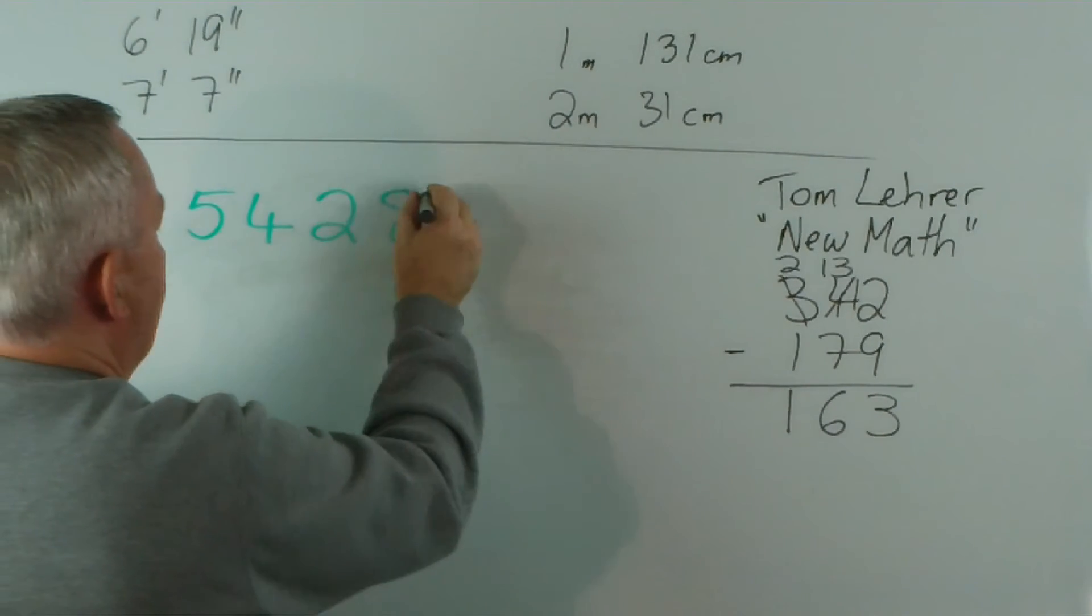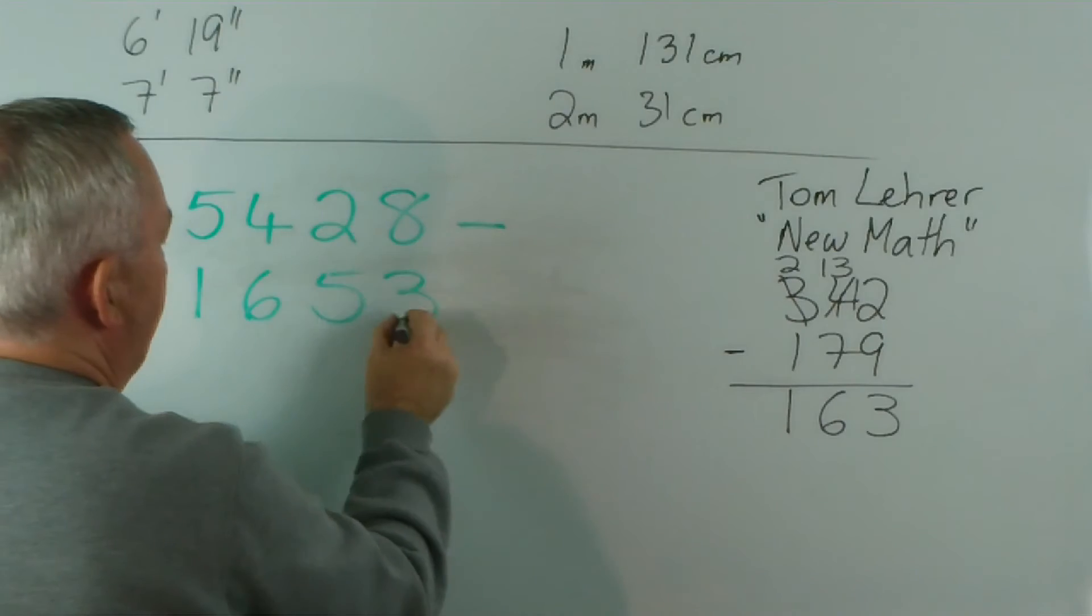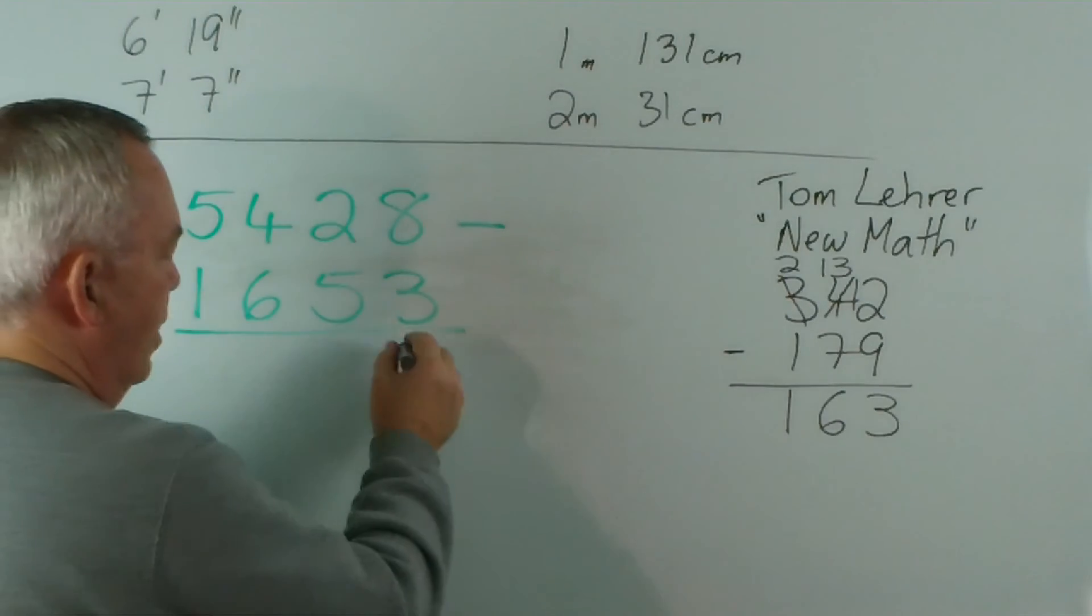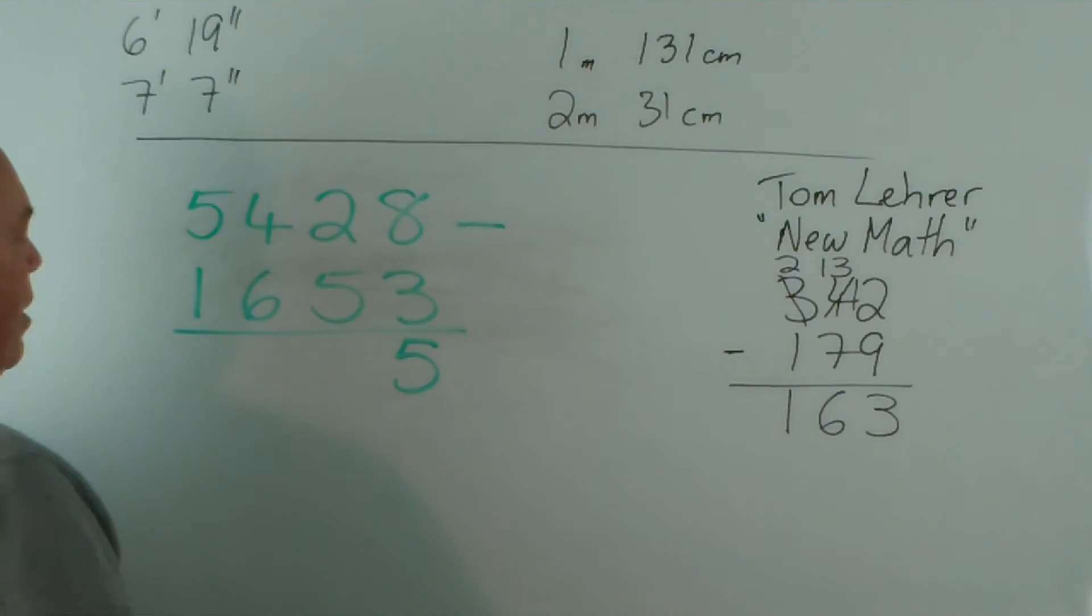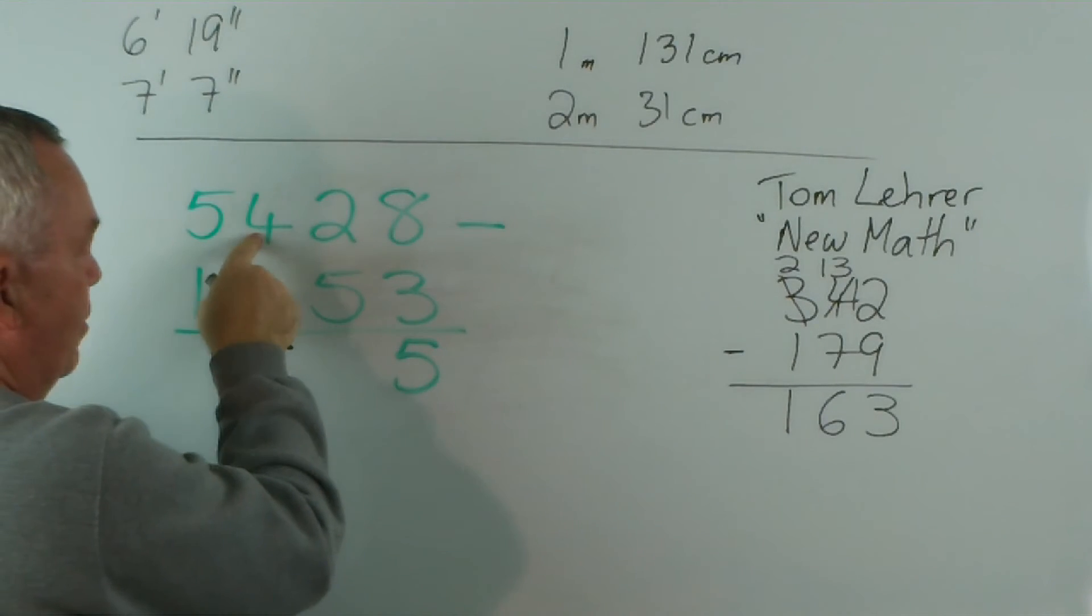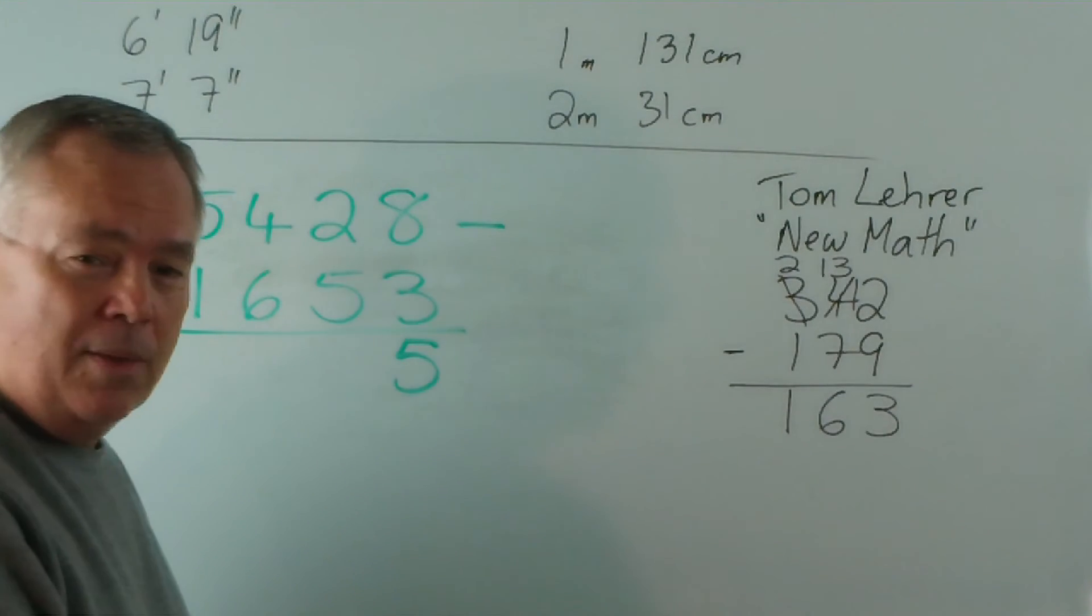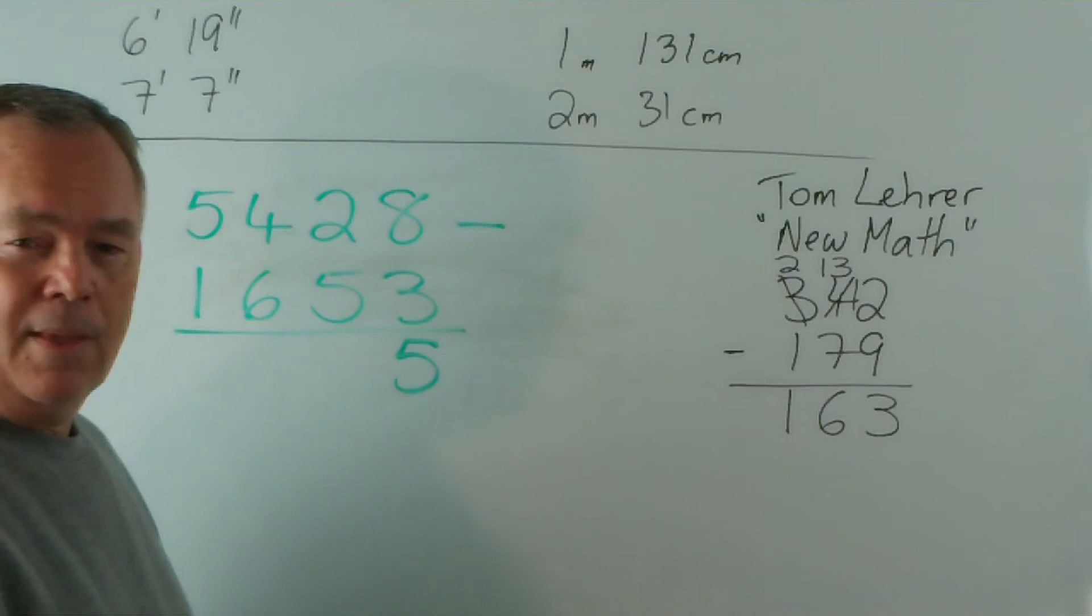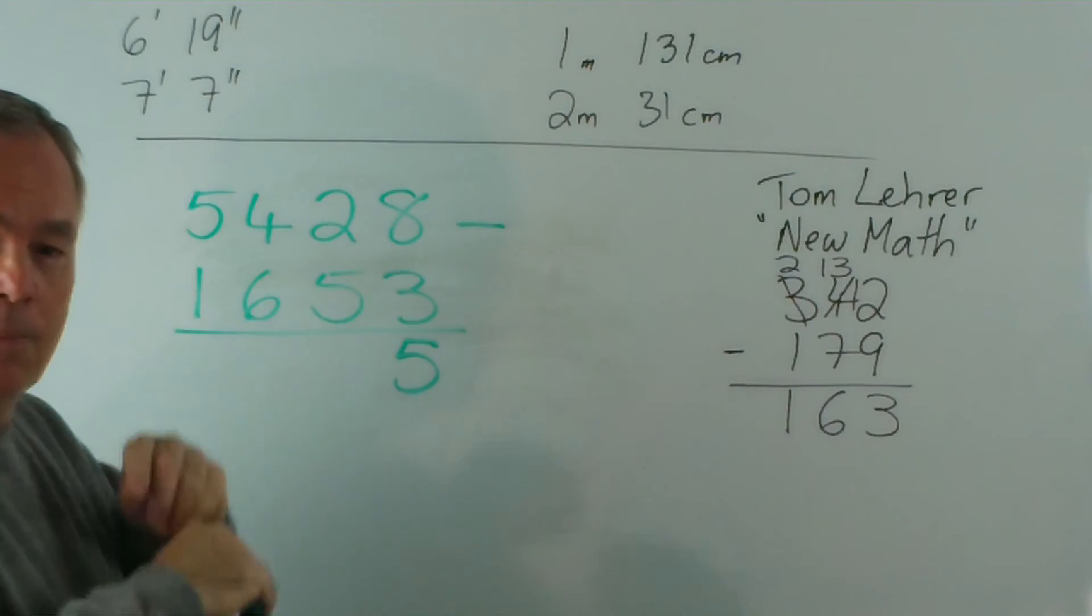5428 take away 1653. And here's the older method. 8 take away 3 ... we can do ... that's 5. But 2 take away 5 ... we can't. Now, whereas in the new method ... we've borrowed ... from within the same number ... we borrowed a bunch of ... one of these and brought it over ... it's worth 10 in this column. The older method ... simply added 10 to this number ... and added 10 to this number. And if they both went up by 10 ... then the subtraction ... the difference between them ... would have stayed the same.